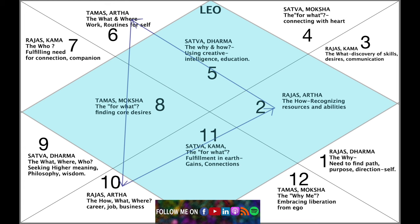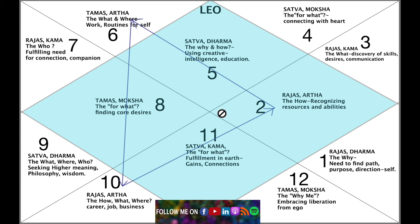Moving on, they need to bring their routines to their daily work — their job, career, or business. Whatever routines you have, you bring them to your work, and that will help you recognize and hone your skills. The question of how do I accomplish what I accomplish is answered by doing these two things: first in the second house, then the sixth house. Then you will truly recognize the abilities and resources you have at your workplace, whether in a job, business, as an employee or employer.